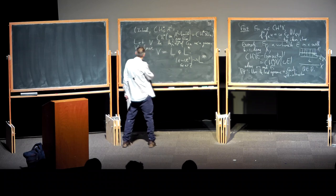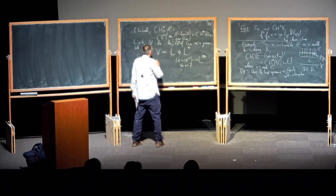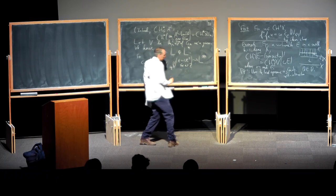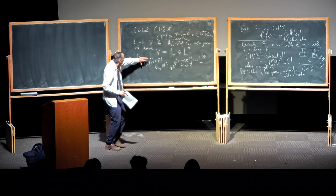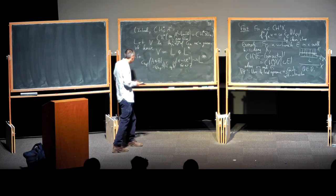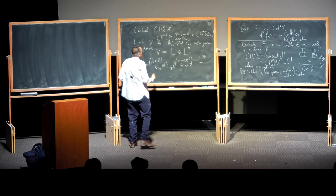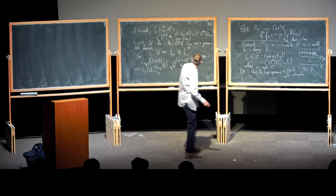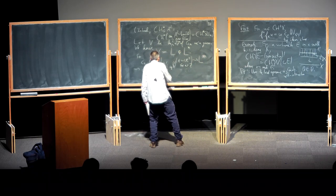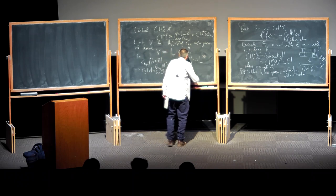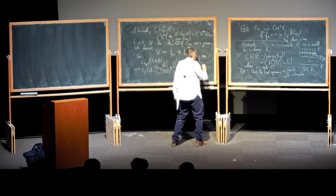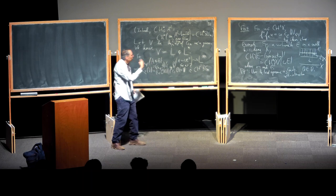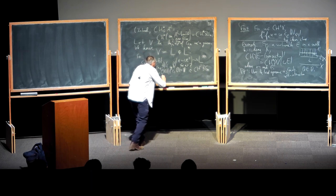The general formula for the top Chern class of a direct sum of two bundles is just the product of their top Chern classes. So c_2 of this bundle E is c_1(O(1)) · c_1(O(-1)). When you take the dual of a line bundle, the first Chern class changes sign. So this is U · (−U) = −U².